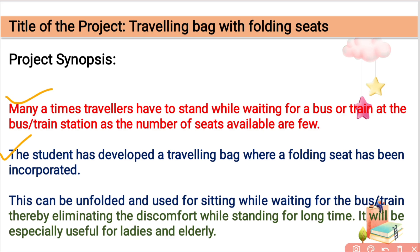It clearly states what my project is. Third — how my project solves the problem: the seat can be unfolded and used for sitting while waiting for the bus or train, thereby eliminating the discomfort of standing for a long time. It will be especially useful for ladies and the elderly.